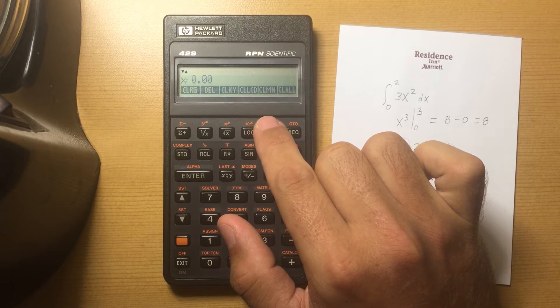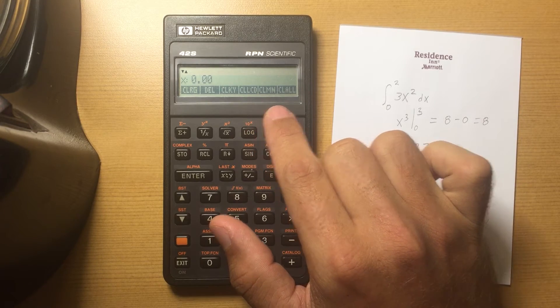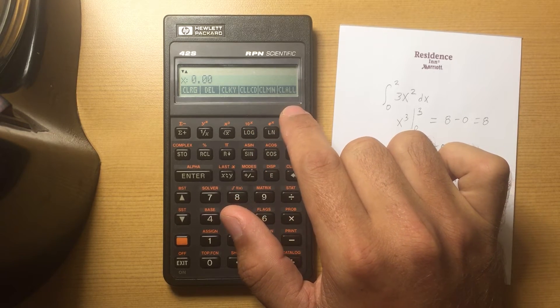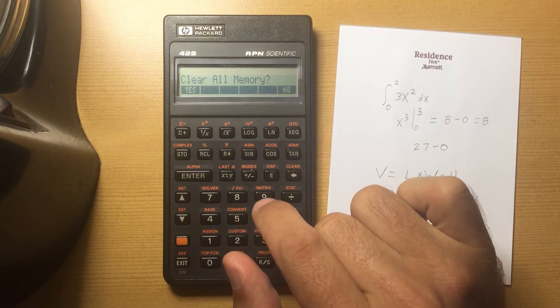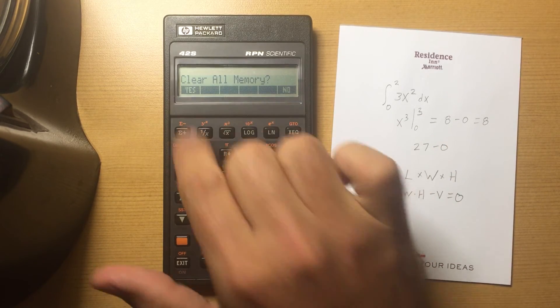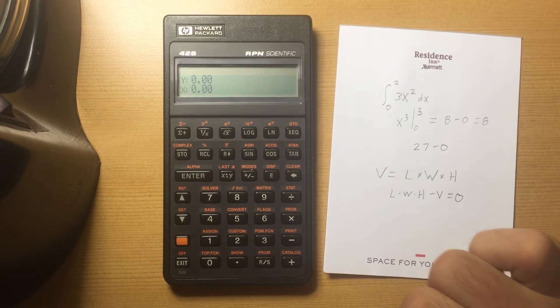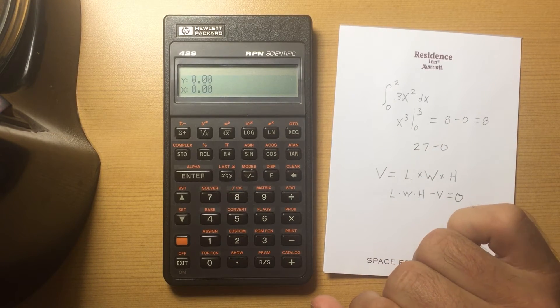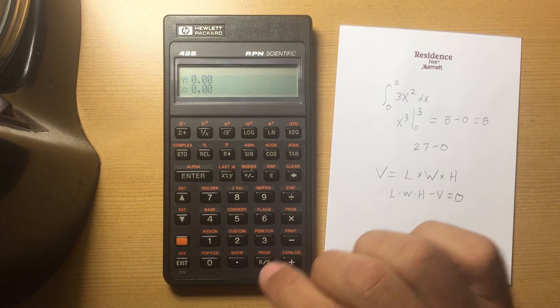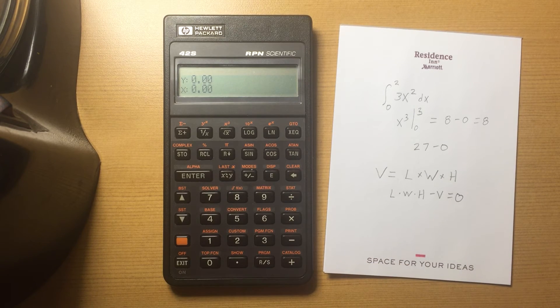Clear Menu - there is a custom menu you can create here and this will clear it. And then Clear All deletes everything on the calculator. If you choose that, you have to say are you sure, yes or no. I don't want to.